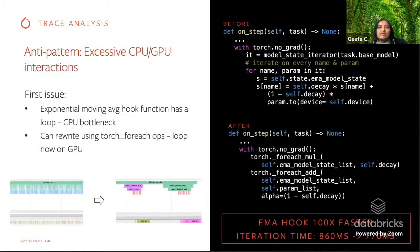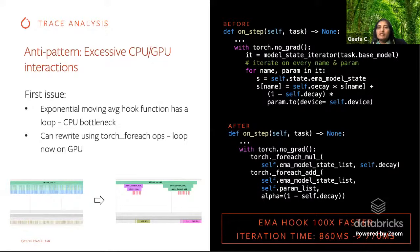Another anti-pattern is excessive interaction between the CPU and GPU. In this particular example, the exponential moving average hook function was originally written in Python code using a for loop, so the CPU was the bottleneck. By rewriting that function using the PyTorch foreach loop, the loop was now executed on the GPU side, and this EMA hook got 100x faster by doing all operations on the GPU versus the CPU.